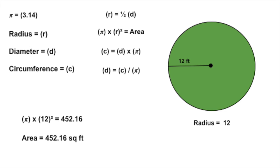How did you do? The correct answer is 452.16 square feet. For real-world purposes, you could round that to 450 square feet, but the correct answer is 452.16. We first multiplied 12 by itself, or squared it, to get 144. Then we multiplied that by 3.14, or pi.